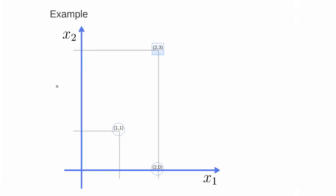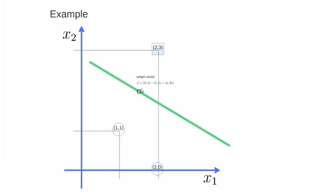Here we show a simple example. Suppose we have two features X1 and X2 and these three data points. We want to find the best hyperplane that will divide these two classes. From this graph we can clearly see that the best division line will be parallel to the line that connects these two values here, so we can define the weight vector accordingly.